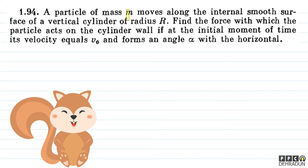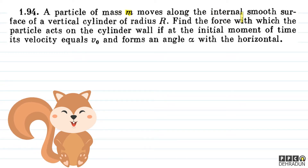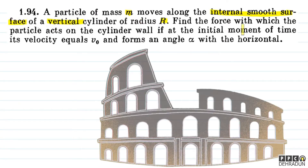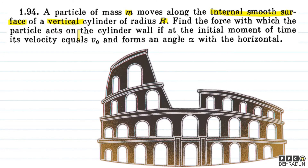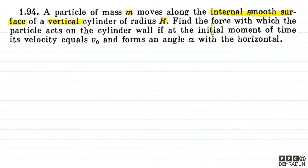The question says: a particle of mass m moves along the internal smooth surface of a vertical cylinder of radius R. Find the force with which the particle acts on the cylinder wall if at the initial moment of time its velocity equals V0 and forms an angle alpha with the horizontal.